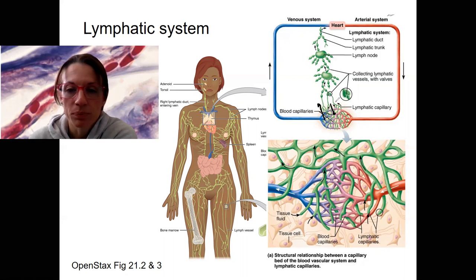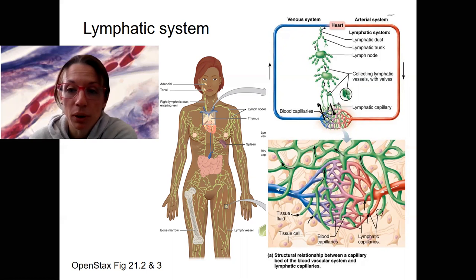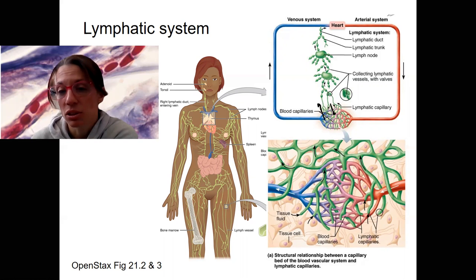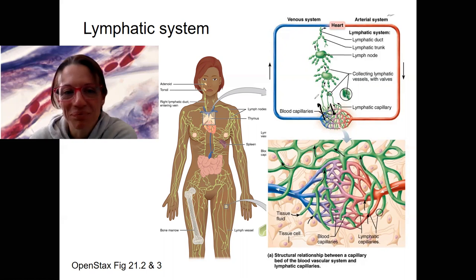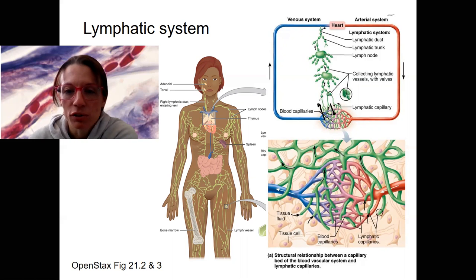The lymphatic capillaries pick this fluid up and prevent swelling in those tissues. The lymphatic system actually returns that liquid — which is lymph — out of the interstitial fluid, gets picked up by the lymphatic system. It's called lymph.